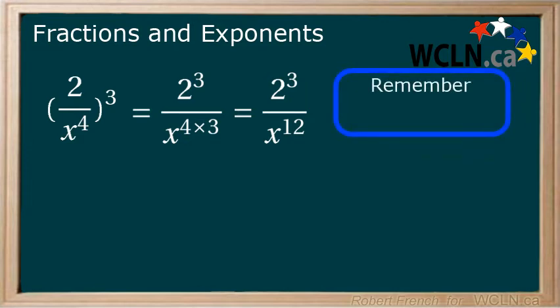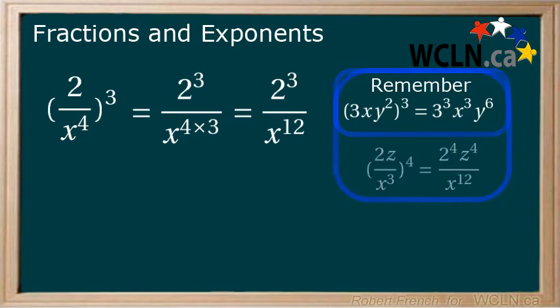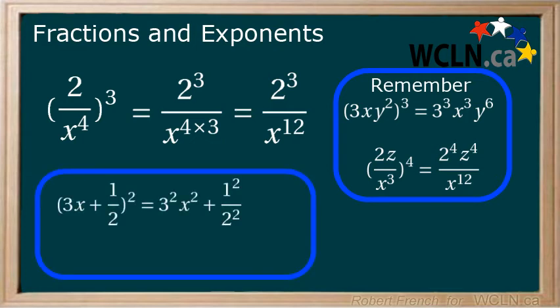Remember, that when you have a term with more than one number or variable in brackets with an exponent, the exponent is applied using the power of a power rule to each number and variable in the brackets. Terms that include a divisor, also known as a denominator, follow the same rule. This does not work for expressions. An expression contains more than one term connected by addition or subtraction.